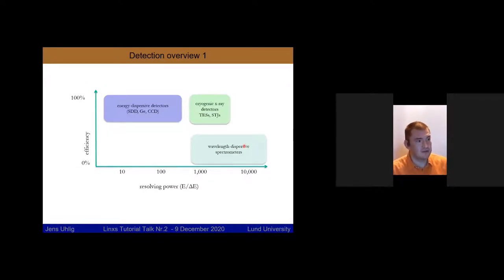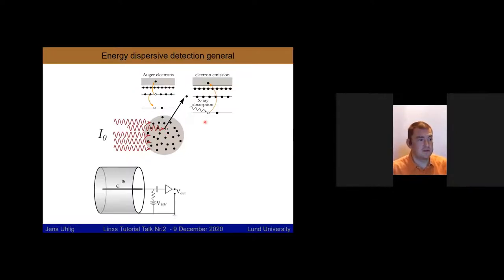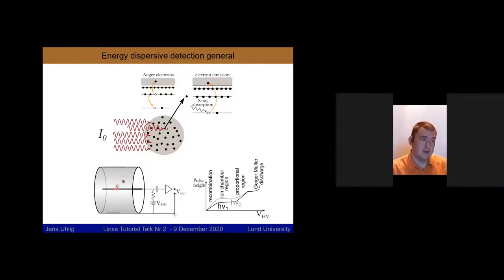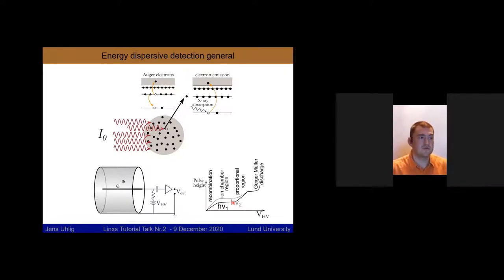There are three different types of detectors. The first are energy dispersive detectors, which absorb the photon and produce a fast electron. In an ion chamber, photons ionize a gas and the charges are accelerated. At a low voltage, the ions recombine. In a proportional range, all charges are extracted one by one — one photon, one electron. At higher voltage you get amplification, and in the Geiger counter regime you get one click per photon.